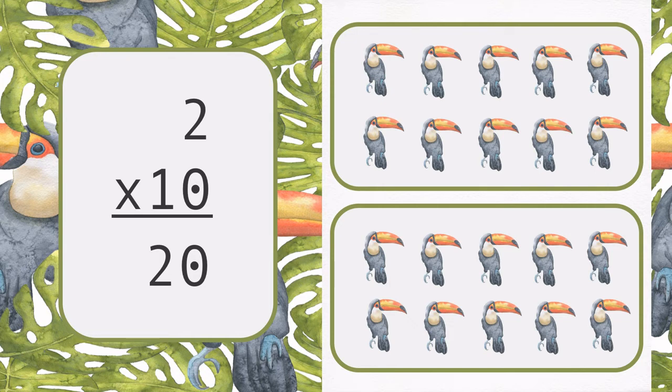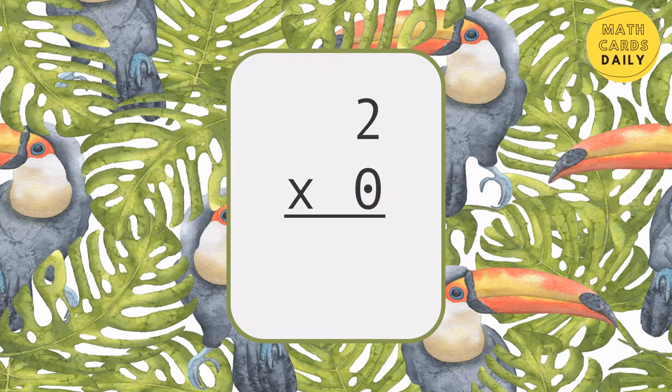There are two groups of 10. 2 times 10 is 20.